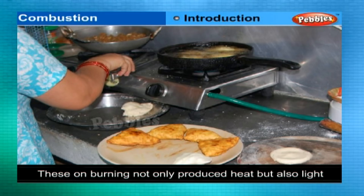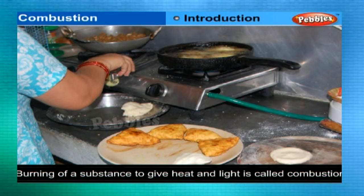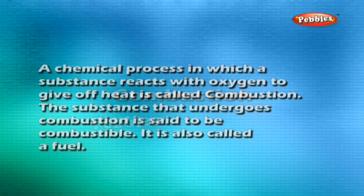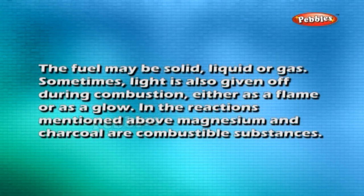These materials, on burning, not only produced heat but also light. Burning of a substance to give heat and light is called combustion. Combustion is a chemical process in which a substance reacts with oxygen to give off heat. The substance that undergoes combustion is said to be combustible — it is also called a fuel. The fuel may be solid, liquid, or gas. Sometimes light is also given off during combustion, either as a flame or as a glow.